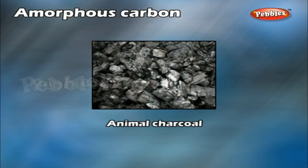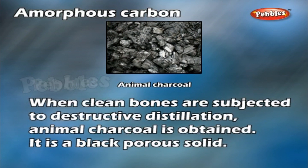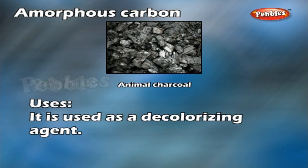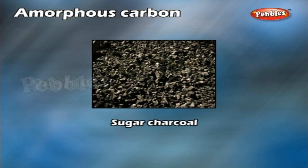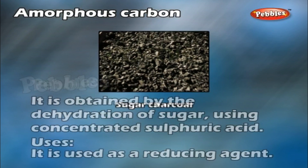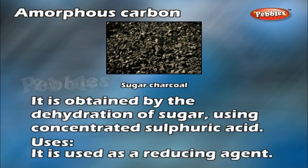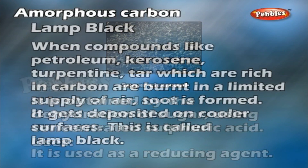Animal charcoal: When clean bones are subjected to destructive distillation, animal charcoal is obtained. It is a black porous solid. Uses: It is used as a decolorizing agent. Sugar charcoal: It is obtained by the dehydration of sugar using concentrated sulphuric acid. Uses: It is used as a reducing agent.